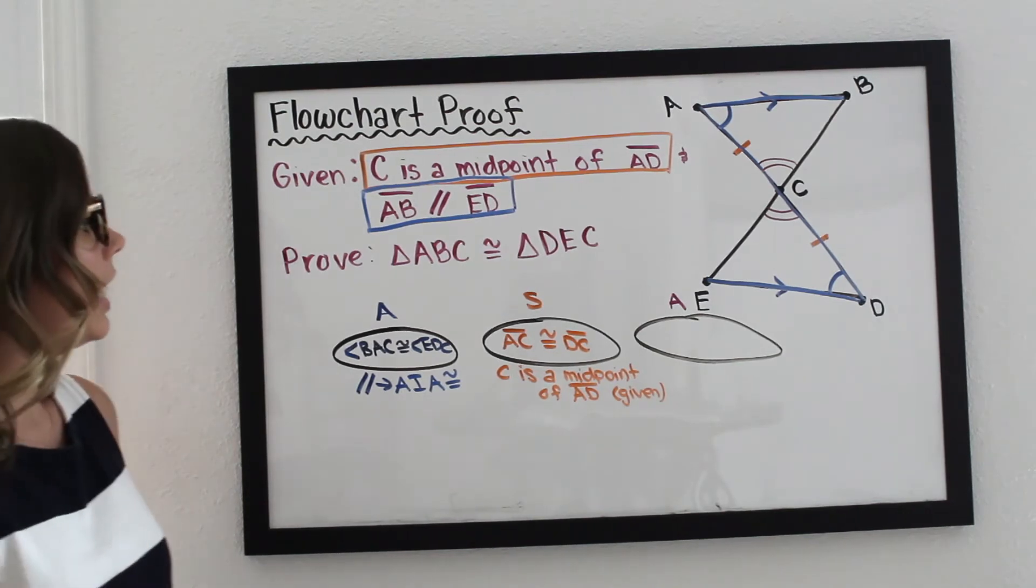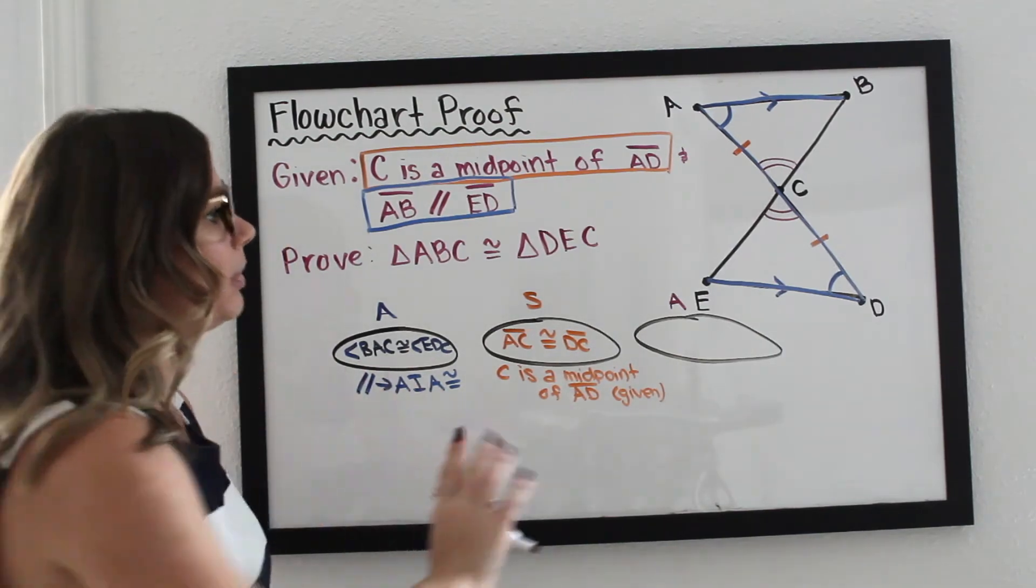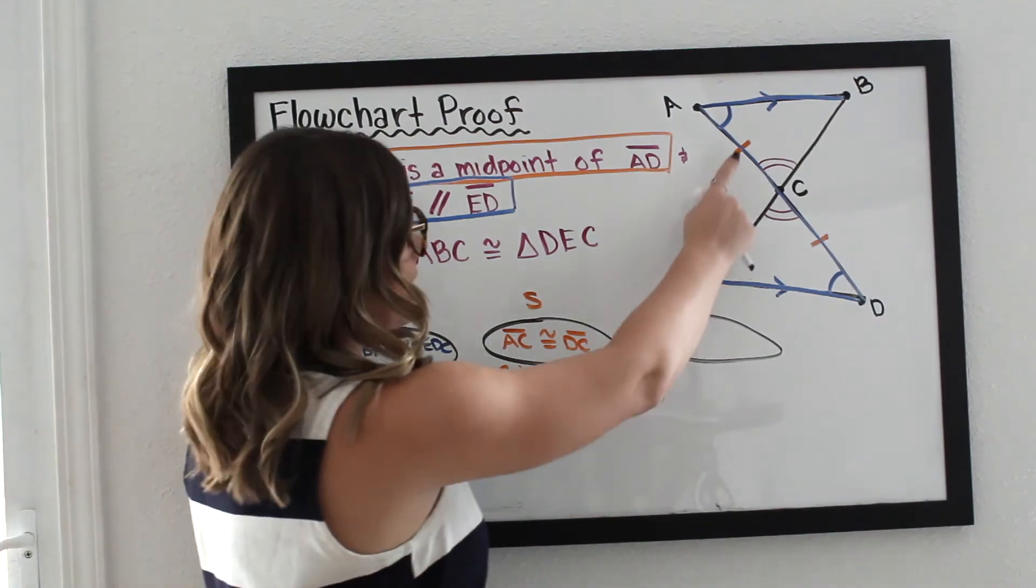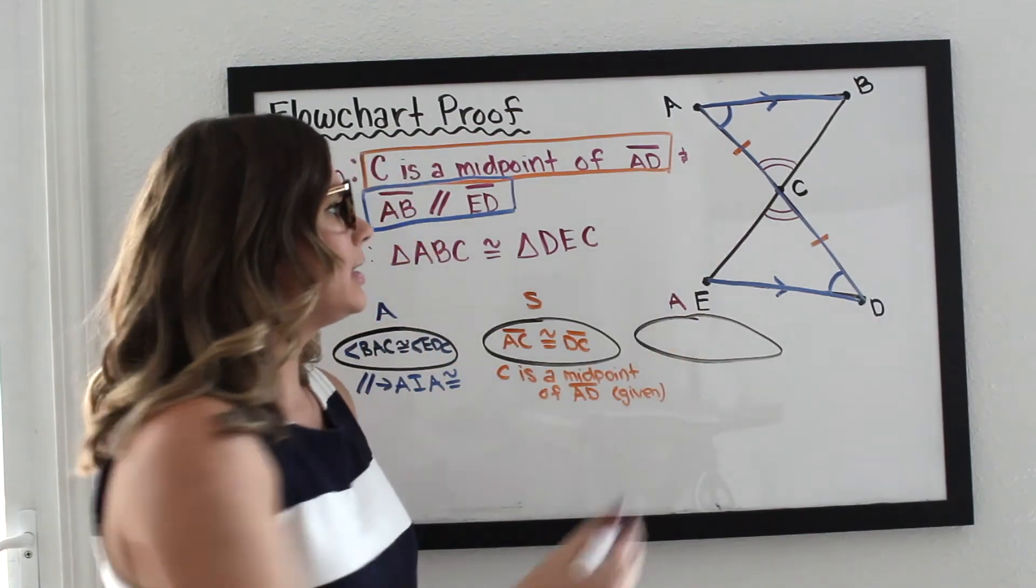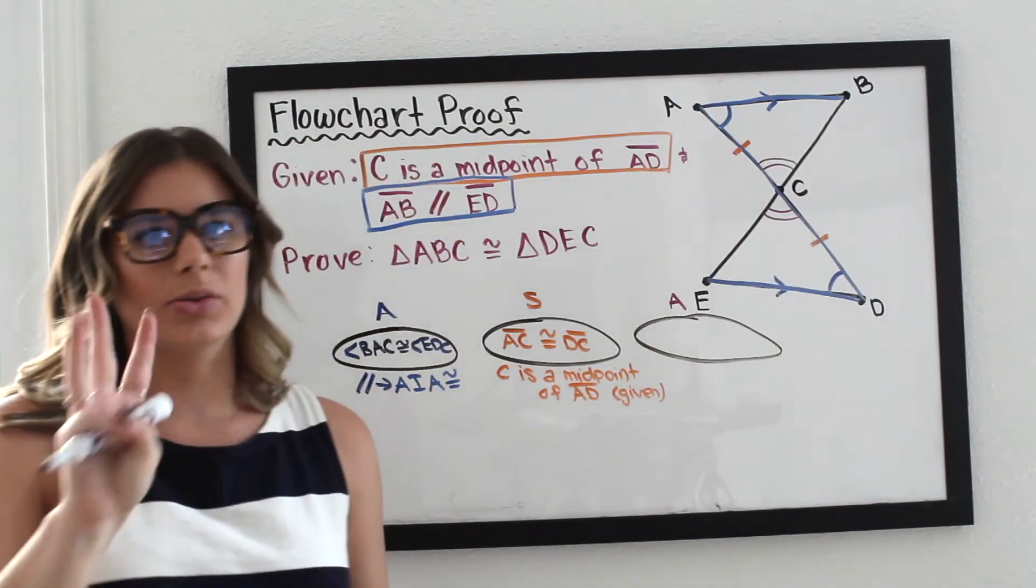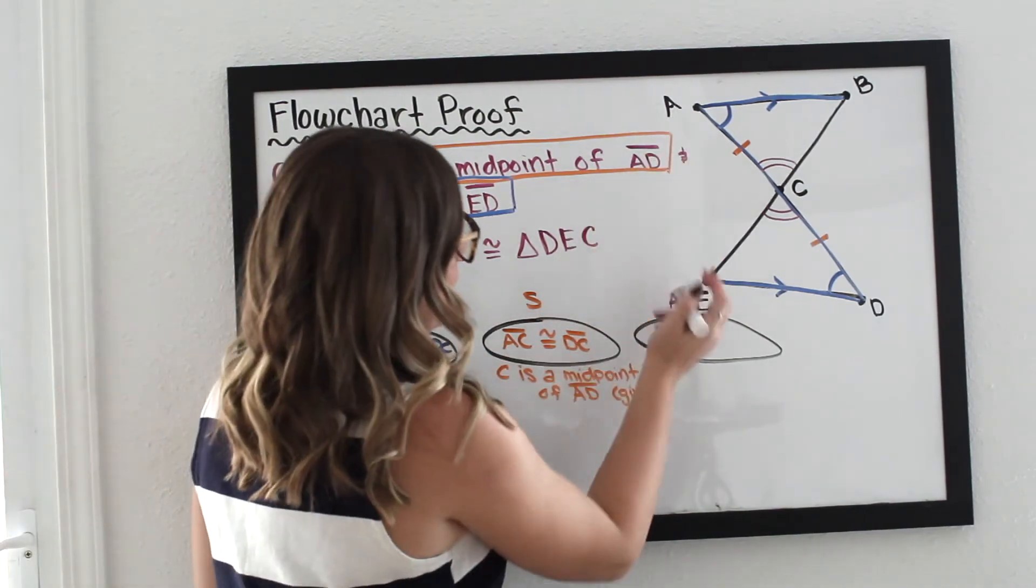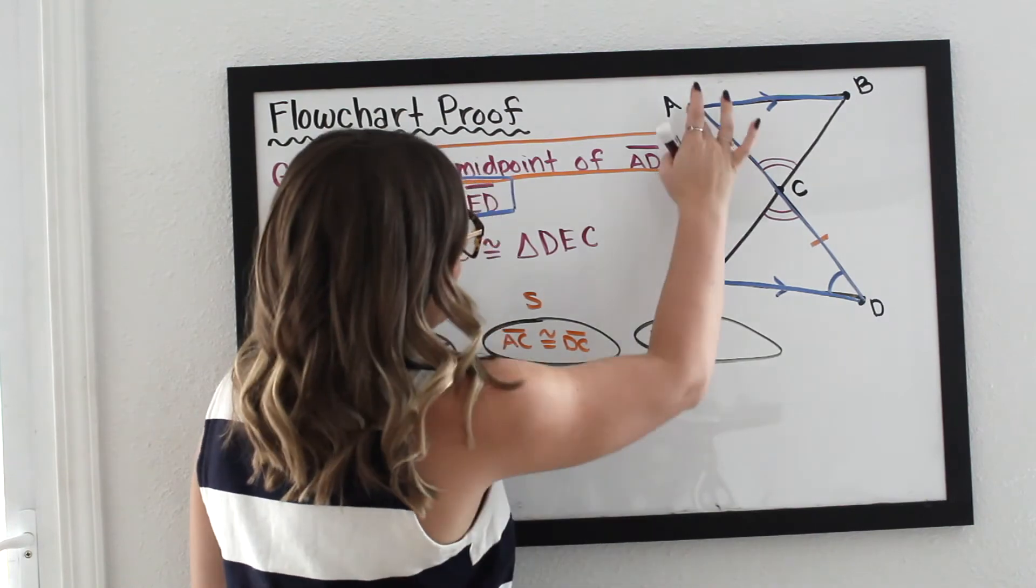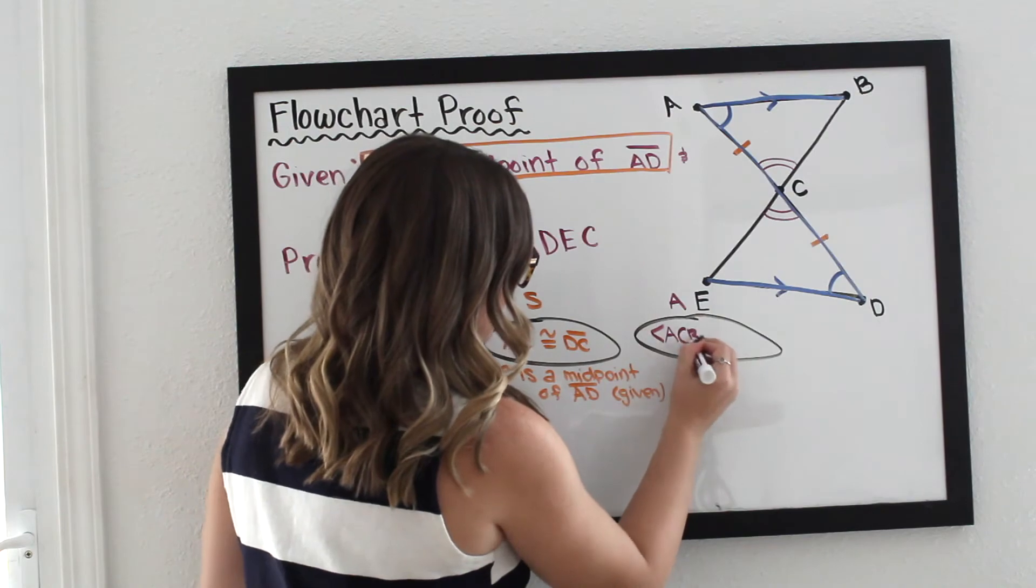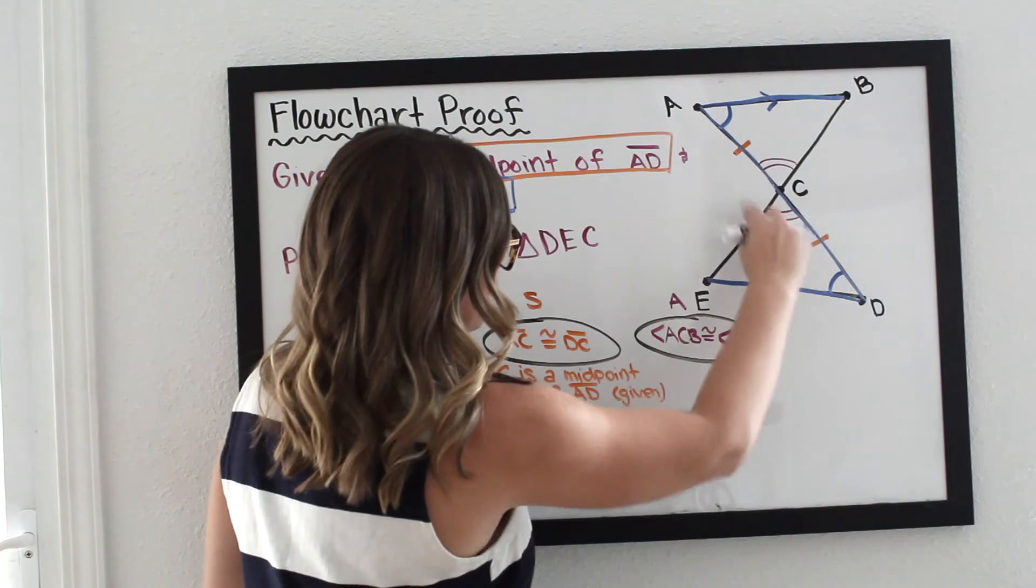And finally, for our last angle, we have angle—and this is really important. I could have probably said angle A is congruent to angle D, and you know what I'm talking about. But I can't say angle C is congruent to angle C, because this is angle C, that is angle C, that is angle C, right? So I have to use my three letters to be very specific about which angle C I'm talking about. So angle, we're going to start here, A, C, B, this one right here, is congruent to angle D, C, E, this one right there.